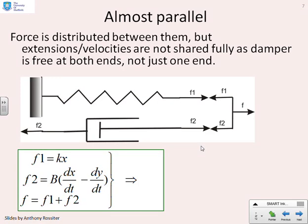Here's an example of something then that's almost parallel, but not quite. You'll see we've fixed one end of the spring. So the spring has got an extension x. However, if you look at the damper, you'll see that the damper has got two free ends, not just one free end. So when I write down the equations, I get f1 equals kx for the spring. That's fine because it's only got one free end. But for the damper,